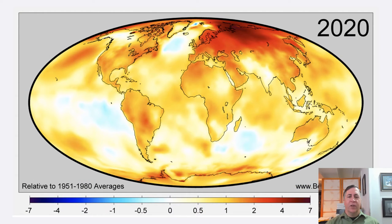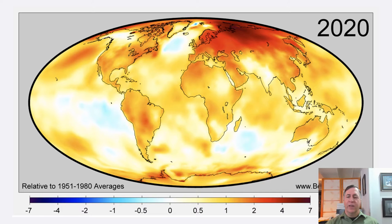The polar regions are warming fastest, especially Siberia and northern Alaska, which means trouble as the permafrost melts and releases methane. The southern Amazon is also warming rapidly, contributing to massive forest fires there. The Antarctic coast is also warming rapidly, causing its ice sheets to melt and slide into the ocean, raising sea levels.